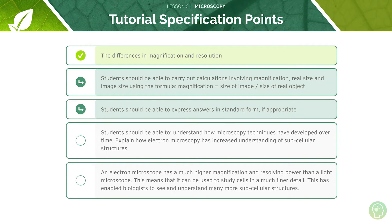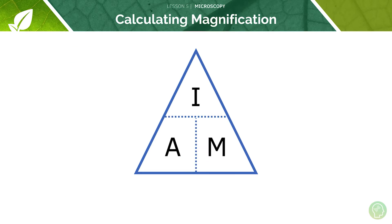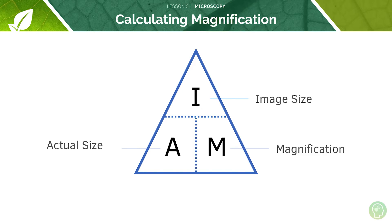Let's move on to try some calculations involving magnification. This is going to be your star equation for this tutorial — it's very simple when you put it into this triangle format. If you're moving between segments — so between A and M for example — that's a multiplication across. But if you're moving down the triangle, that's a division.